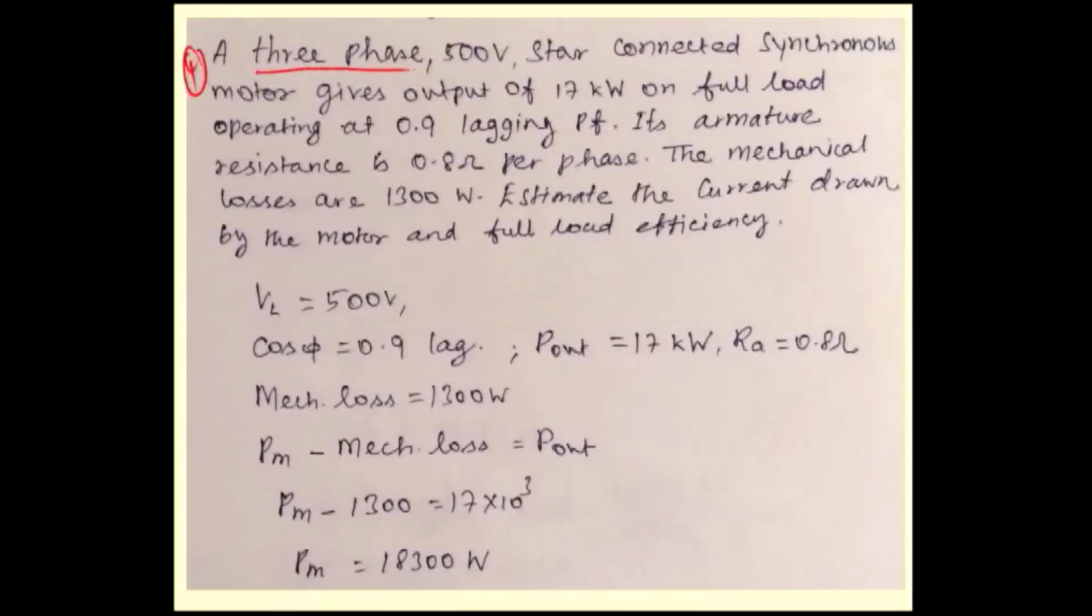Fourth problem: A three-phase 500 volt star connected synchronous motor gives output of 17 kilowatt on full load operating at 0.9 lagging power factor. Its armature resistance is 0.8 ohm per phase. The mechanical losses are 1300 watts. Estimate the current drawn by the motor and full load efficiency.